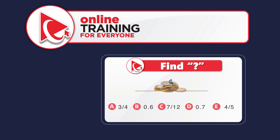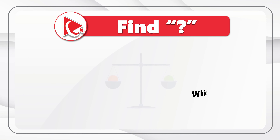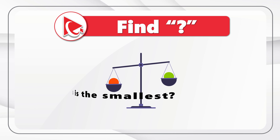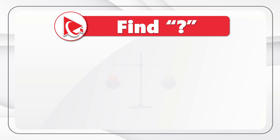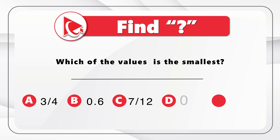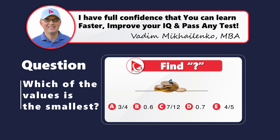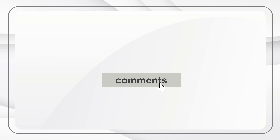Here is one of my favorite questions to test your analytical skills and attention to detail. You need to determine which of the values is the smallest. The choices are: A) 3/4, B) 0.6, C) 7/12, D) 0.7, and E) 4/5. To get the correct answer, we need to convert all values to a common format. I chose decimal format.